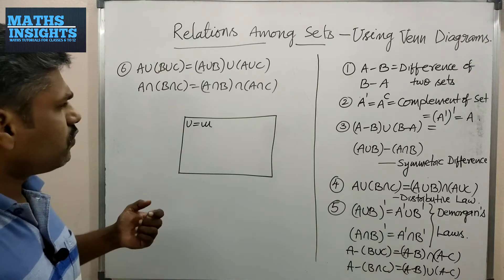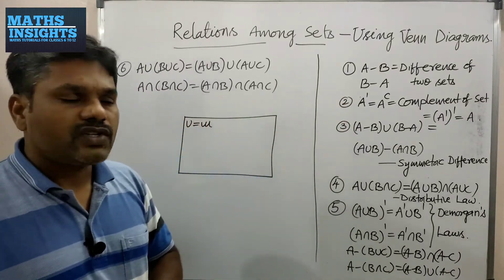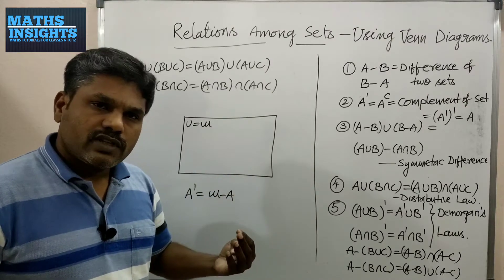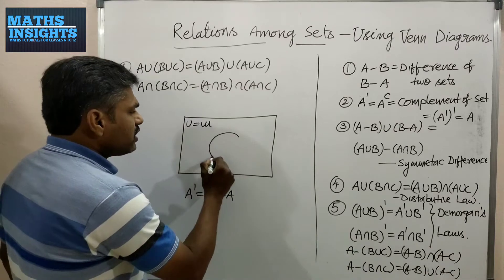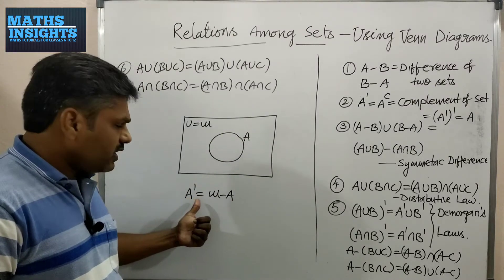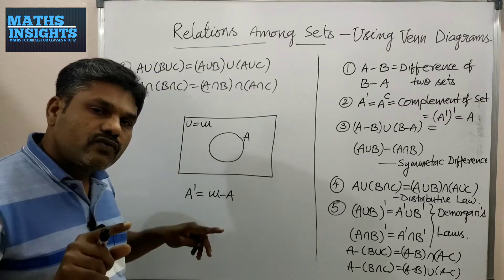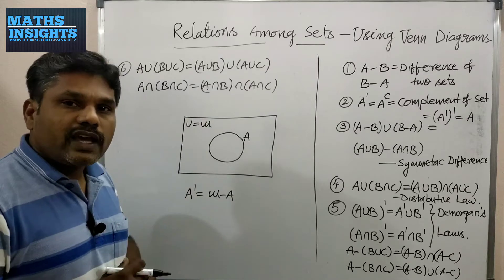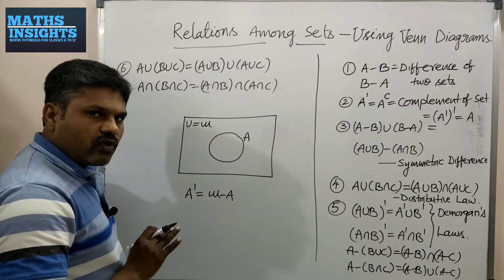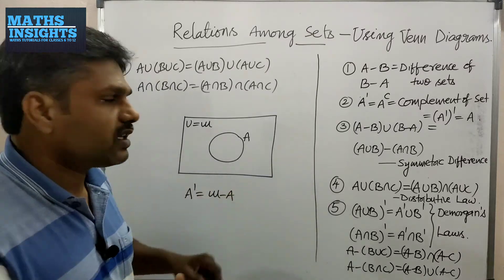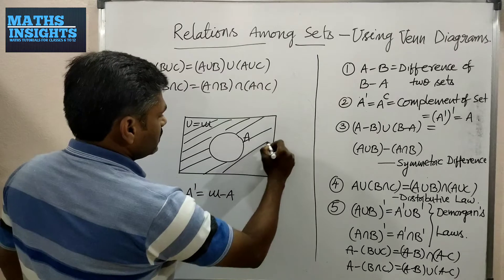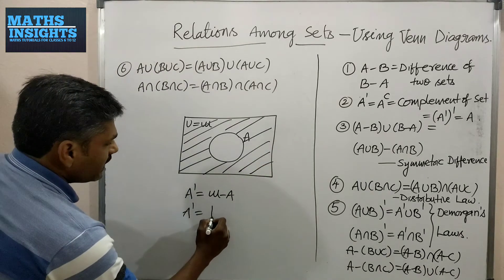By the definition, A' equals μ minus A. Every set is a subset of the universal set, so set A is drawn within the universal set and labeled A. As per the definition, A' equals μ minus A — from the universal set we subtract the area containing set A. The remaining region is the area where A' is shown, using whatever type of lines you want.